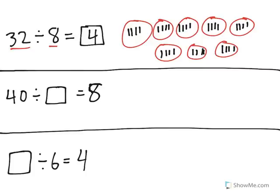Next, we have 40 divided by blank equals 8. This means that we started with 40. We split it into a certain number of groups. We're looking for the divisor. We don't know how many groups. We do know that there ended up with 8 in each group. So what I'm going to do is I know I started with 40, and if there are 8 in each group, I'm just going to count groups of 8 until I get to 40.